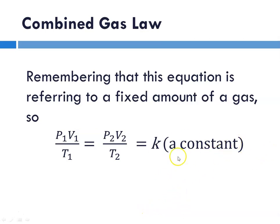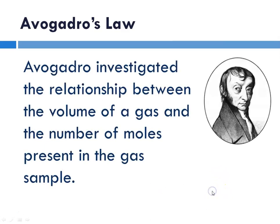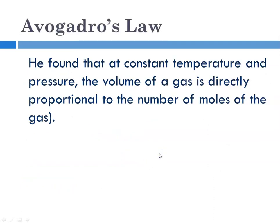Now we have to work our way up to what this constant is all about, and to do that we start with our friend Avogadro. Avogadro's law was about the number of moles of gas and how it relates to volume. Avogadro investigated the relationship between the volume of a gas and the number of moles in a sample, and he found that at constant temperature and pressure, the volume of a gas is directly proportional to the number of moles of that gas present.